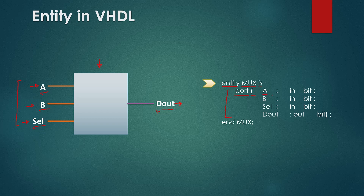First is signal A, so type A, then press the colon key, then type IN for the input signal, and then enter the data type of signal A which is BIT in our case. BIT is the binary data type that supports values 0 and 1, and terminate this line with the semicolon symbol. Similarly we will continue to list more inputs for input B and input SELECT in the same way. Some of you who are familiar with writing the entity may use std_logic as the data type in place of BIT, but that is fine too — both will work here.